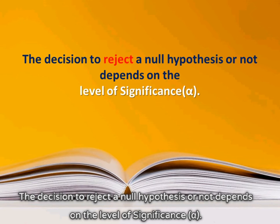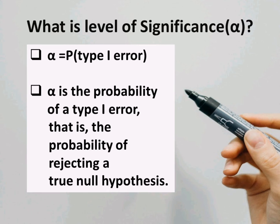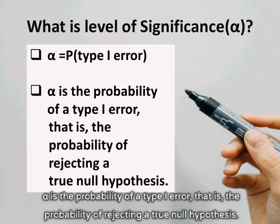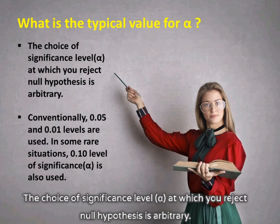The decision to reject a null hypothesis or not depends on the level of significance, alpha. What is level of significance, alpha? Alpha is the probability of a type 1 error — that is, the probability of rejecting a true null hypothesis. The choice of significance level, alpha, at which you reject the null hypothesis is arbitrary.